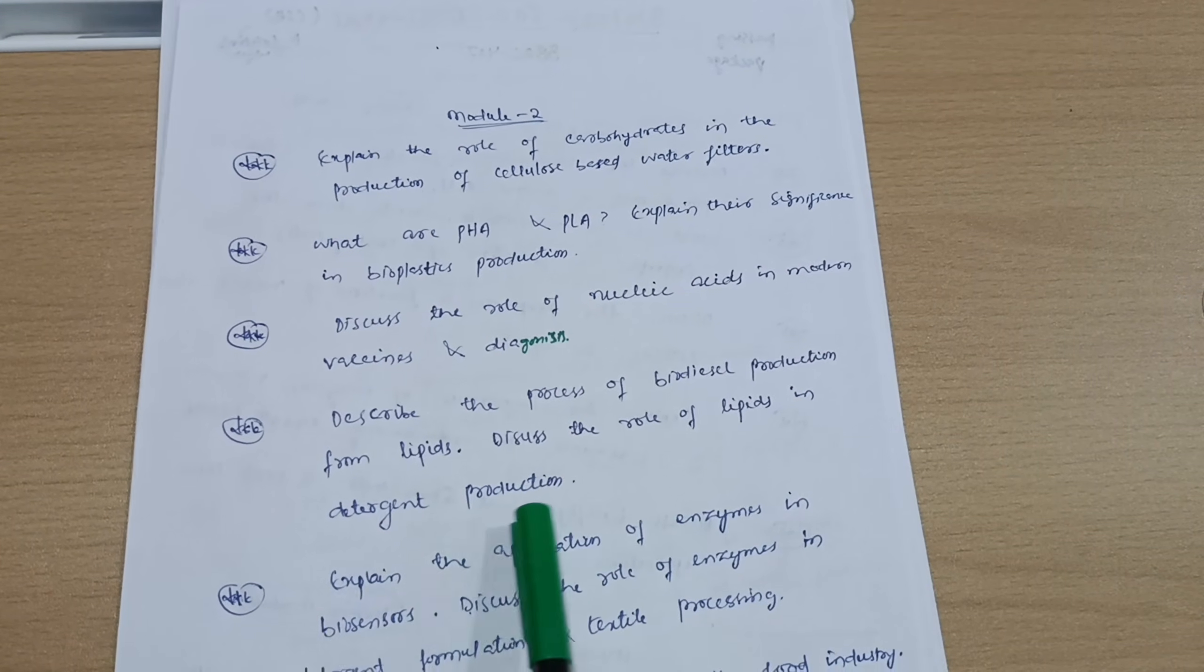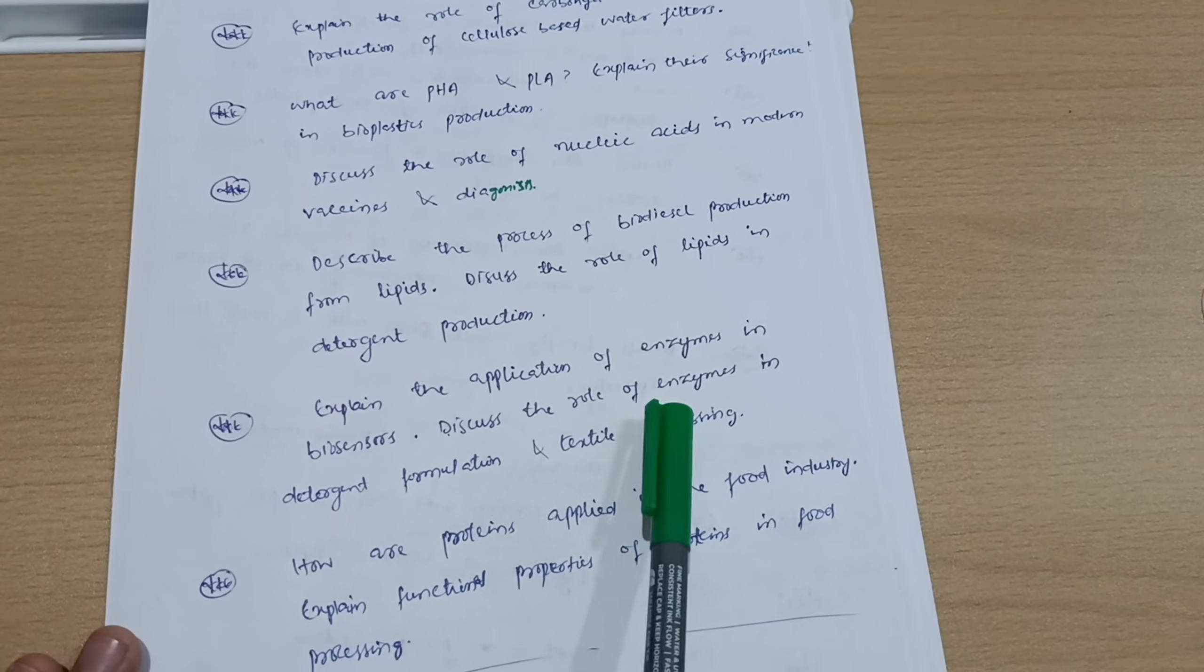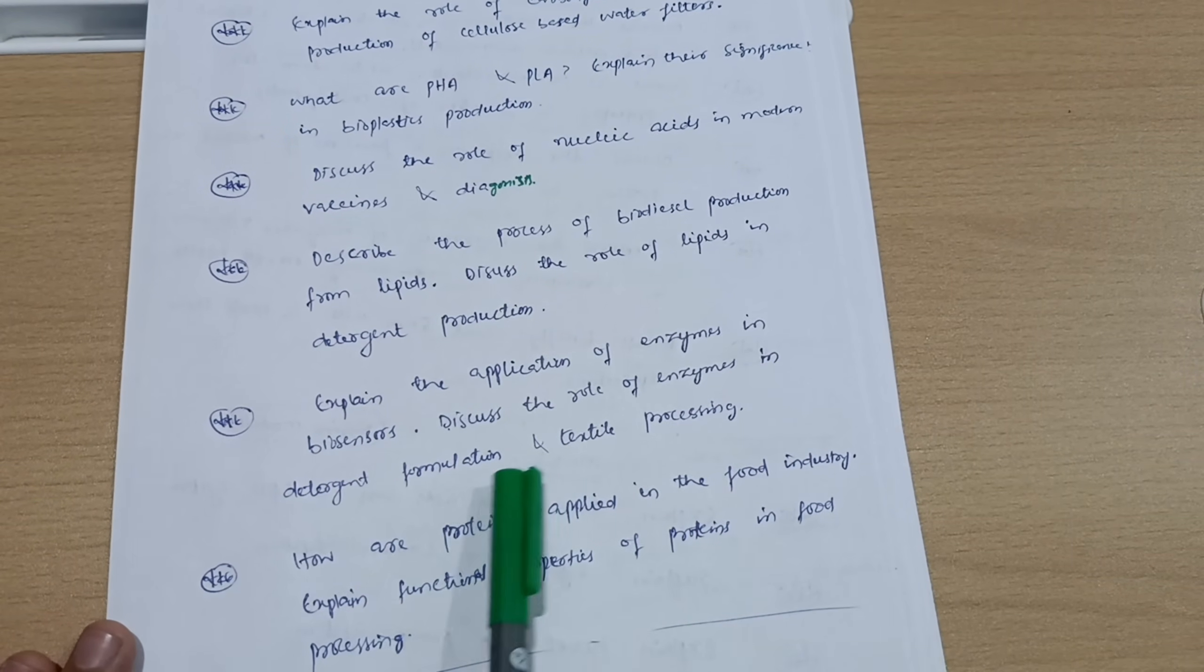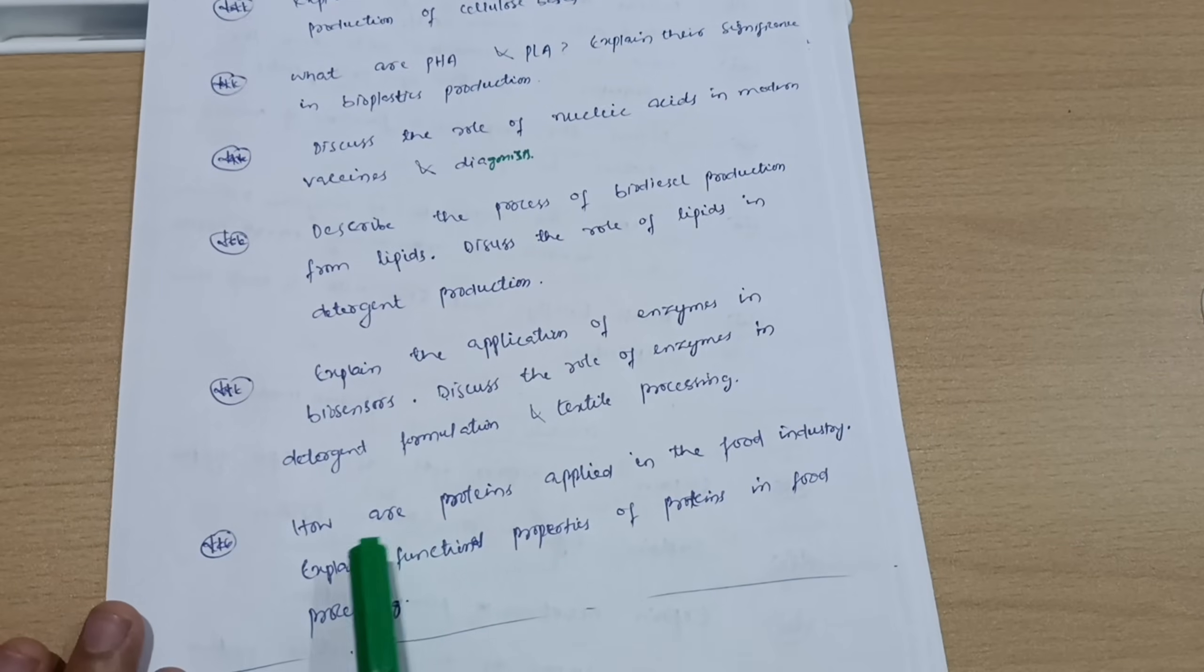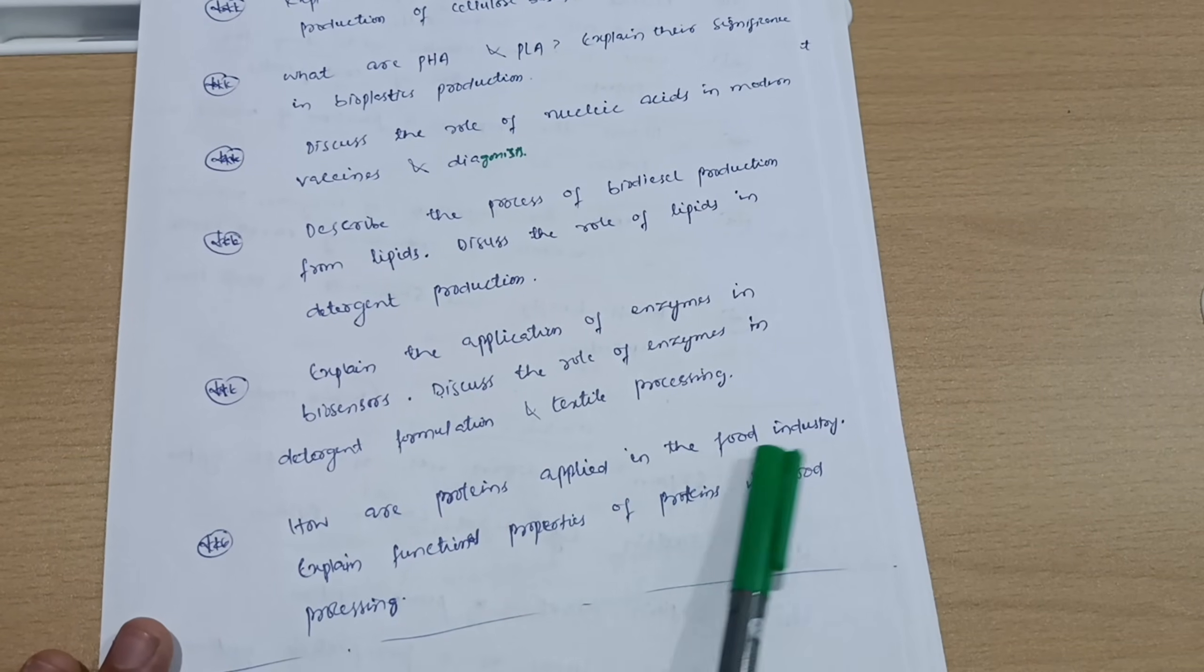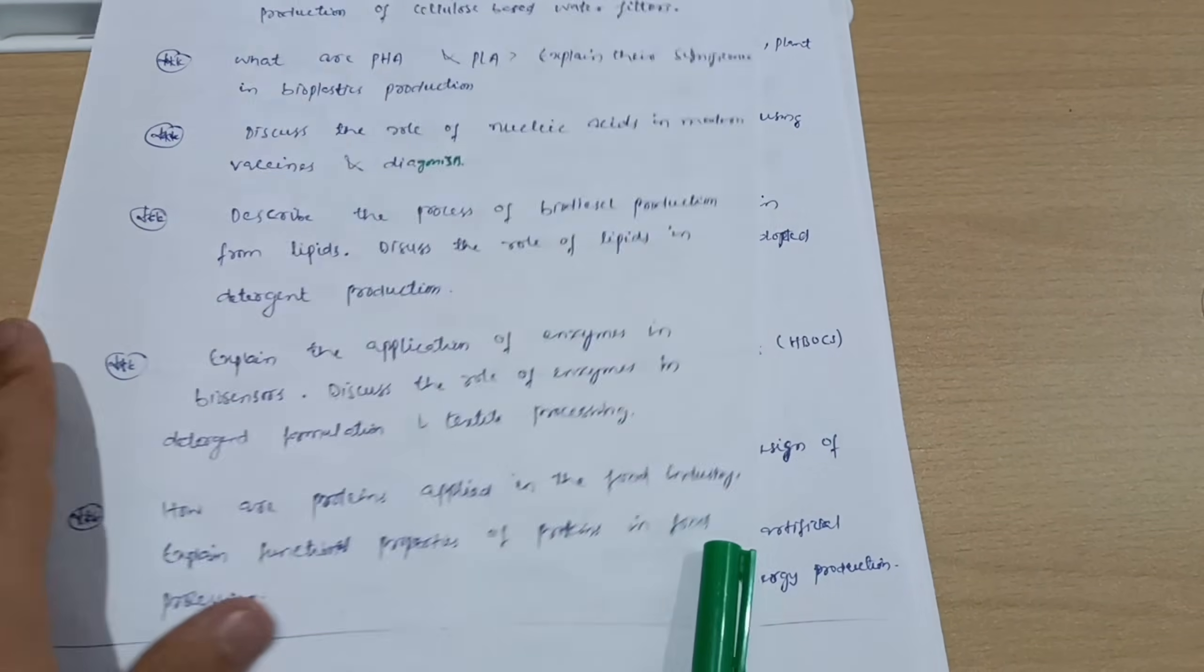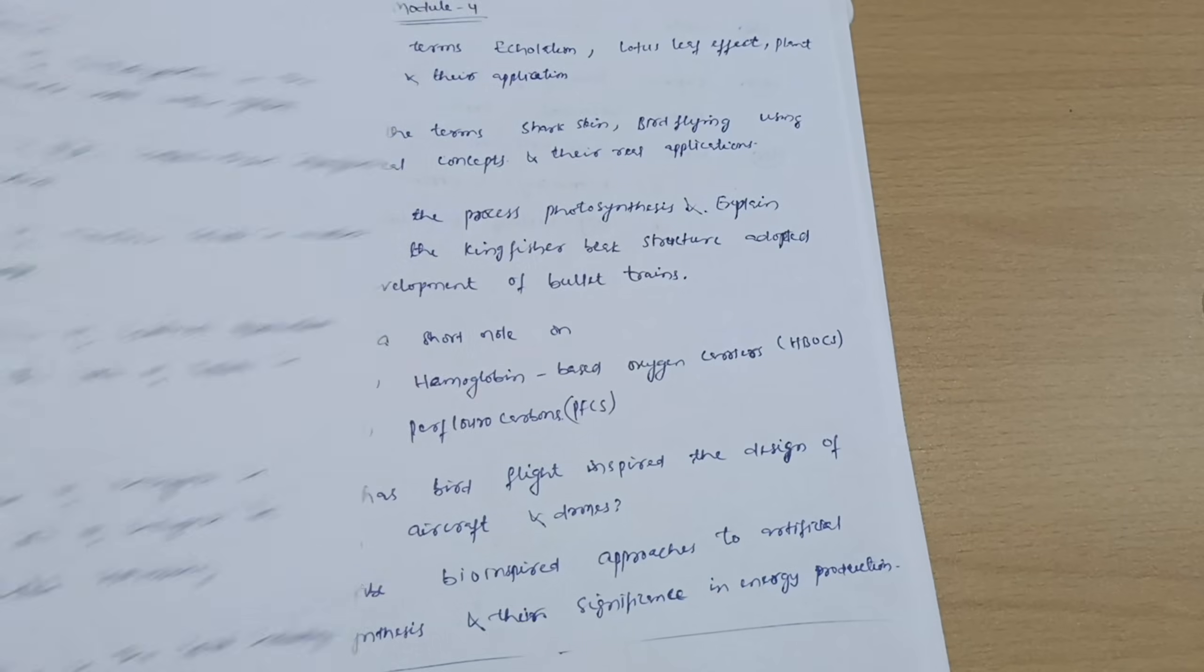Next, describe the process of biodiesel production from lipids. Discuss the role of lipids in detergent production. Explain the application of enzymes in biosensors. Discuss the role of enzymes in detergent formulation and textile processing. And the last question from Module 2: How are proteins applied in the food industry? Explain functional properties of proteins in food processing. This is all about Module 2—it is again a passing module.